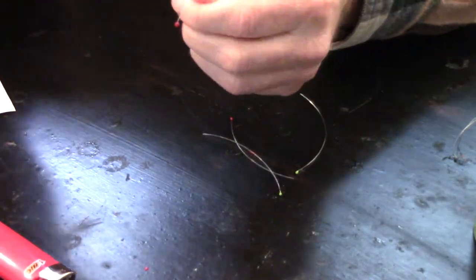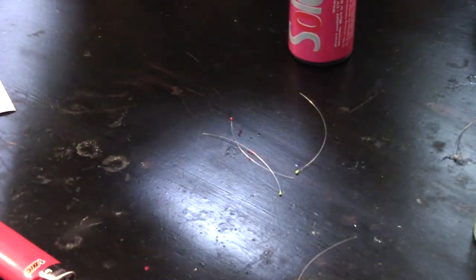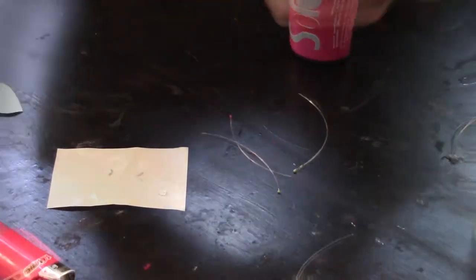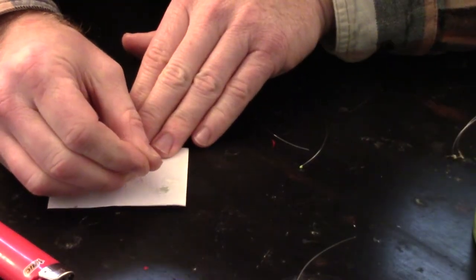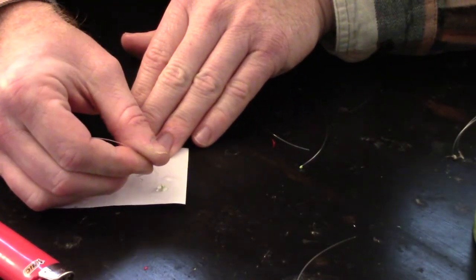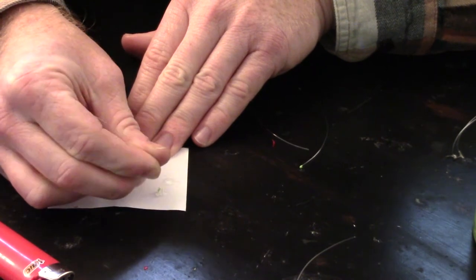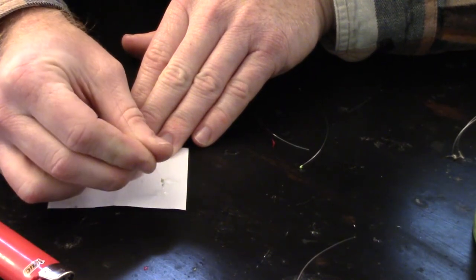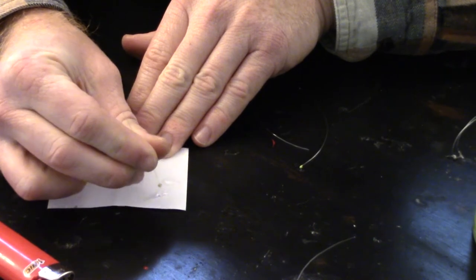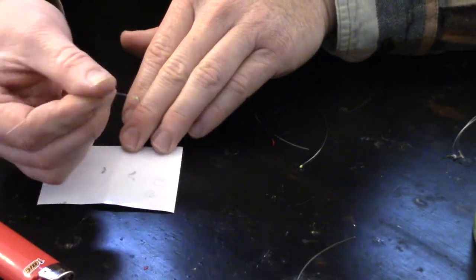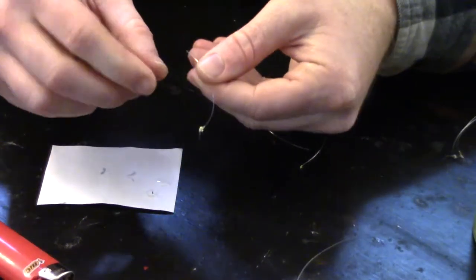I'm going to go ahead and do that same thing with the thick formula so you can see the difference. You want to do the same thing as the thin, just go ahead and dip it right in. And this is going to create a much larger little bulb on the end.